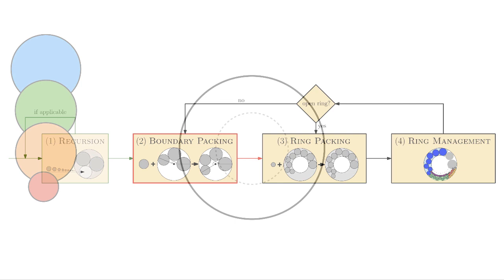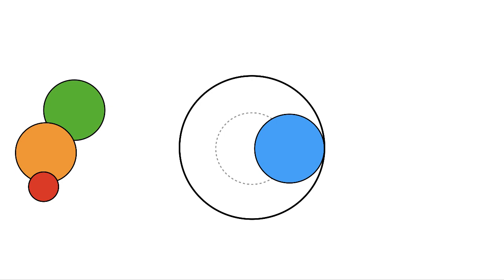We sort the disks by decreasing radii and iteratively pack them adjacent to the container boundary. We stop when we reach a disk that is smaller than a quarter of the container, as shown here, or the current red disk no longer fits.